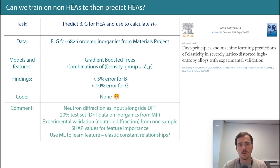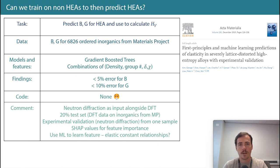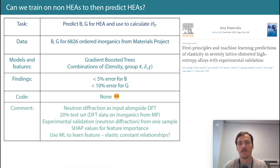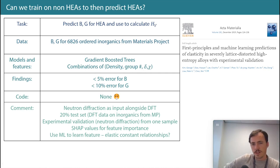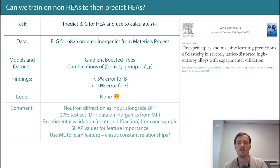The data they had was bulk and shear modulus from DFT via the Materials Project: 6,826 ordered inorganic compounds, which are not HEAs. They built a gradient-boosted tree model, used a 20% test set, and more or less followed good practices — except they never provided code or data. They stated that features included density, group number, size, and electronegativity, but without the code it's hard to know exactly what they used.